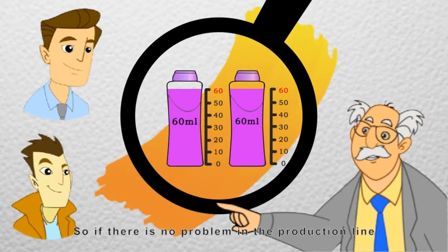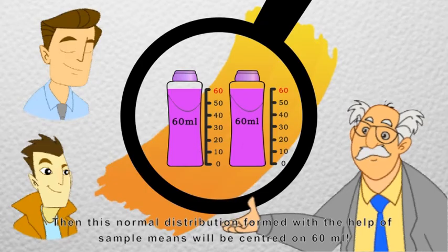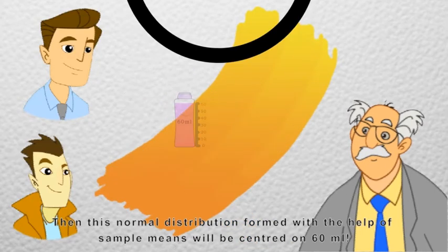If there is no problem in the production line, then this normal distribution formed with the help of sample means will be centered on 60 ml.